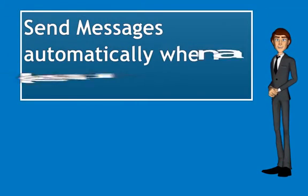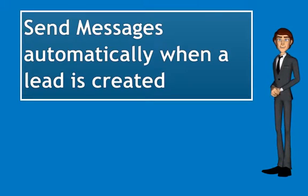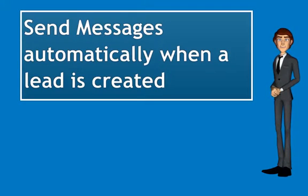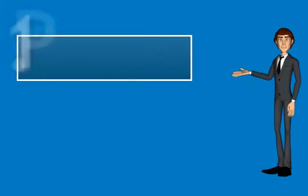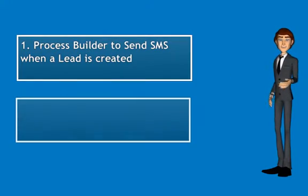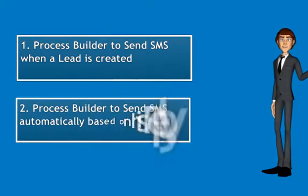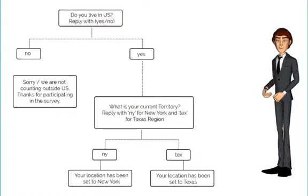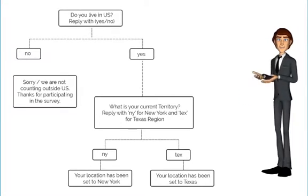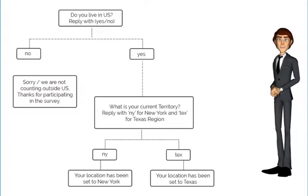We need to send SMS automatically when a lead is created, and further replies would be sent based on the response. Hence, we would create two Process Builders: one to send SMS when a lead is created, and another to send SMS based on the response. We would be sending a message to a lead as soon as it is created and send further messages based on replies. The following flowchart could be used to explain the flow of messages that would be sent.